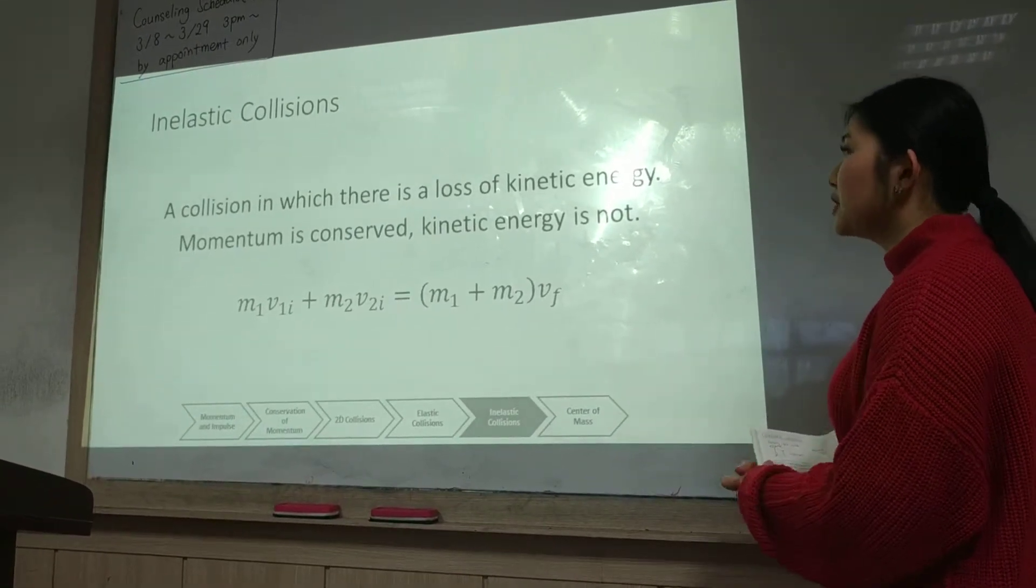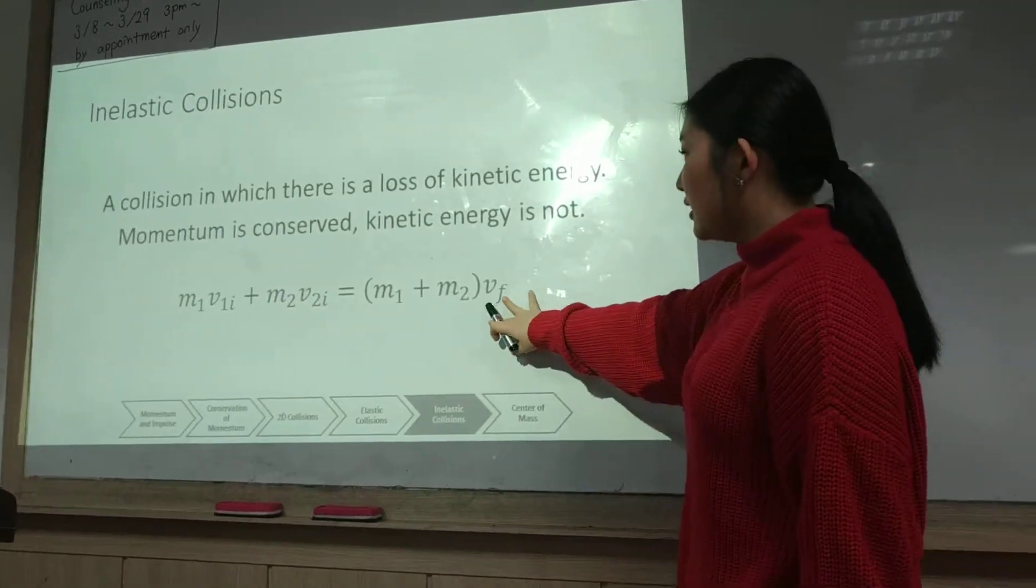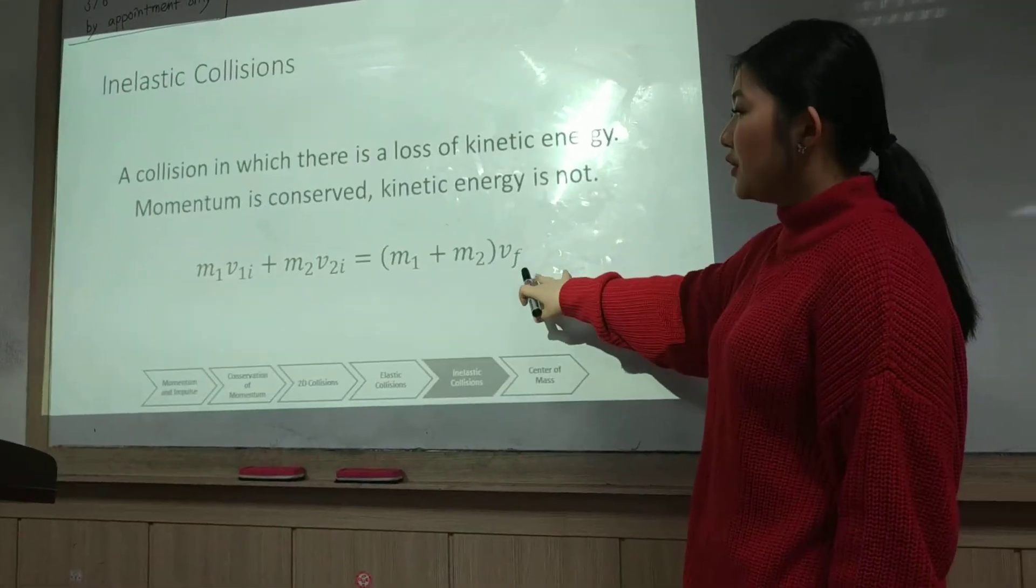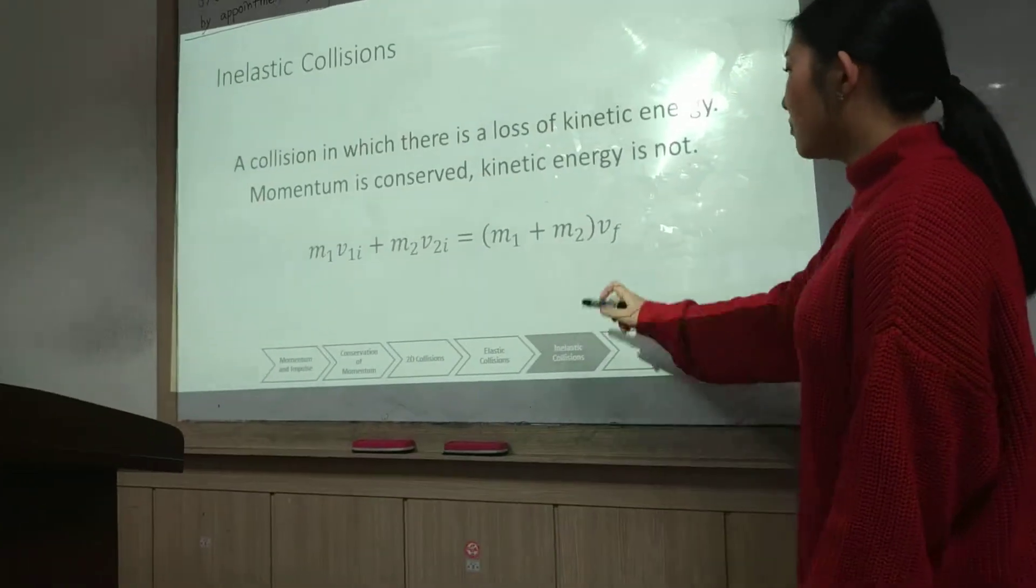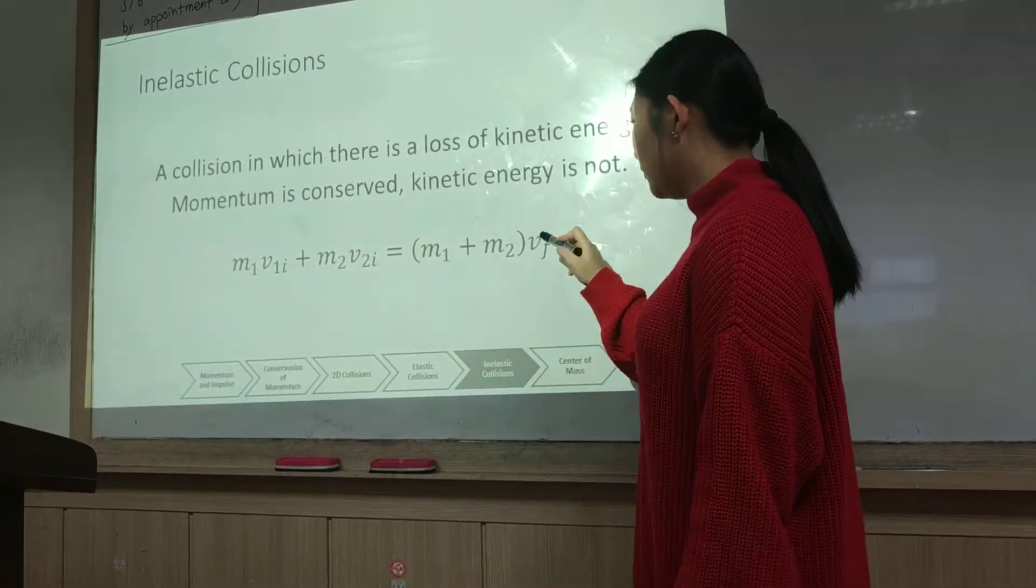And so the equation that you're going to be using for inelastic collisions looks like this. M1V1i plus M2V2i equals the masses combined times velocity final.